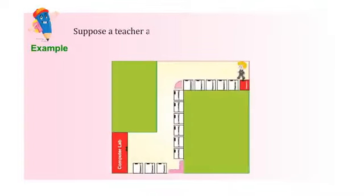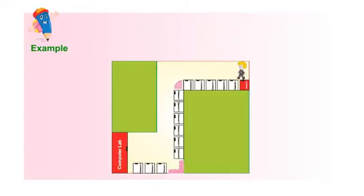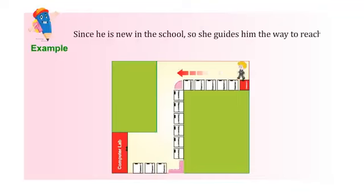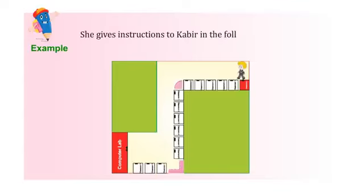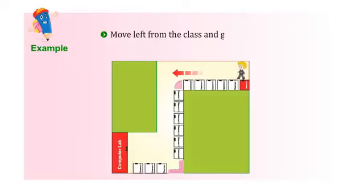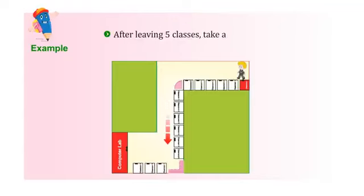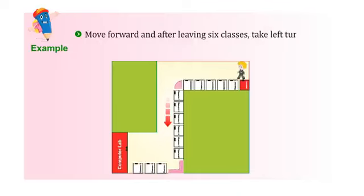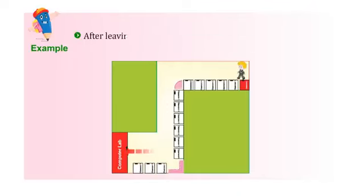Suppose a teacher asks Kabir to bring notebooks of his class from the computer lab. Since he is new in the school, she guides him the way to reach the computer lab. She gives instructions in the following manner: move left from the class and go straight, after leaving five classes take a right turn, move forward and after leaving six classes take a left turn, and after leaving three classes you will reach the computer lab.